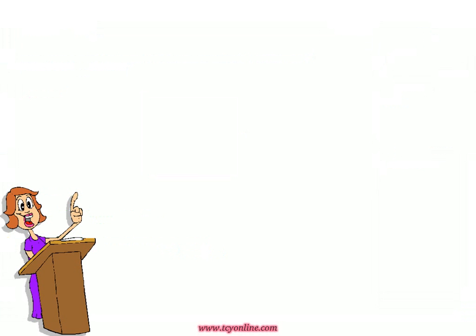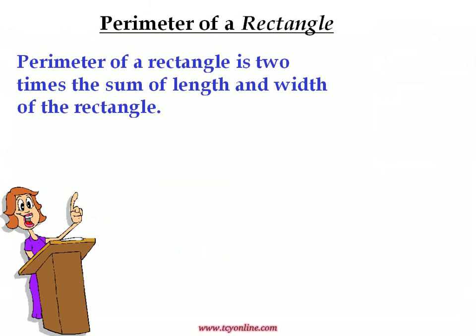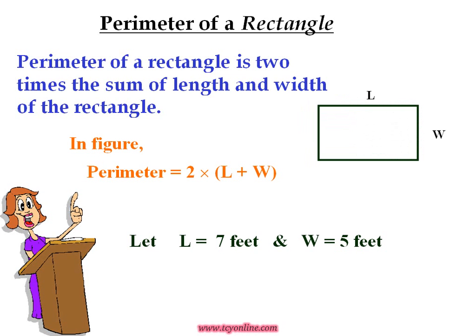We shall now see how to calculate the perimeter of a rectangle. Perimeter of a rectangle is defined as two times the sum of length and width of the rectangle. If, in the given figure, length is equal to L and width is equal to W, then perimeter will be equal to two times L plus W. Let us assume that length is equal to 7 feet and width is equal to 5 feet. Then, as perimeter is equal to two times L plus W, perimeter is equal to two times 7 plus 5, we find that perimeter of the rectangle is equal to 24 feet.